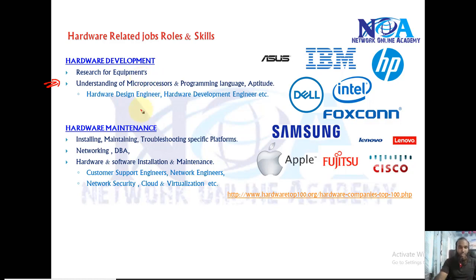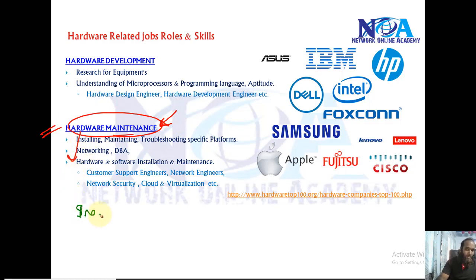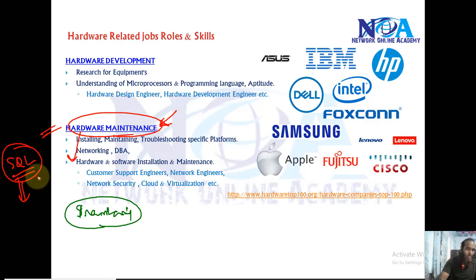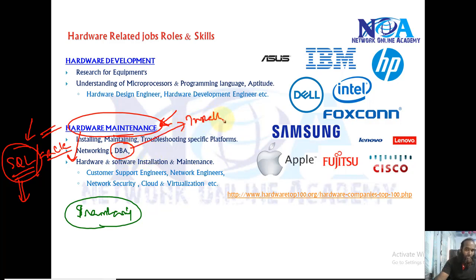The other category is hardware maintenance. In hardware maintenance you are not actually developing any kind of hardware, but you are responsible for maintaining specific hardware. For example, you might be responsible for maintaining SQL database servers, maintaining the database on them, or Oracle servers. This includes installing specific software, maintaining specific devices, and making sure they are working fine — troubleshooting specific platforms.